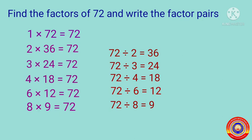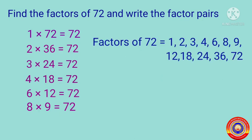Now we can say that the factors of 72 are 1, 2, 3, 4, 6, 8, 9, 12, 18, 24, 36, and 72.